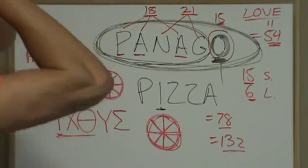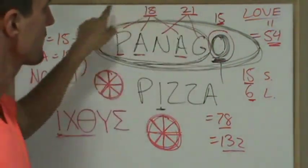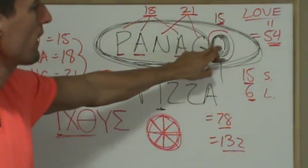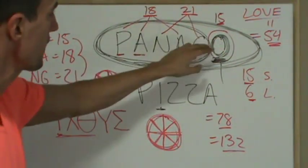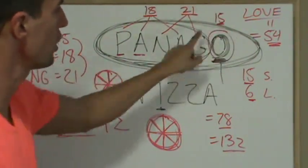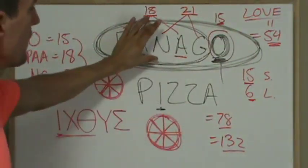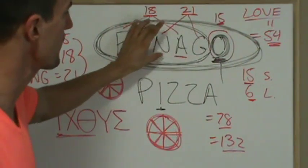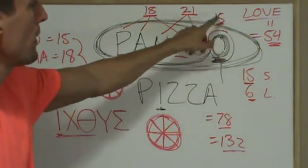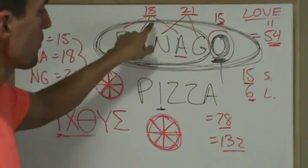And it ends with the famous O, and the logo highlights the keyness of that O by having a separate color in the actual logo for Panago. I believe this is like green and red, or red and green. I think this is red, and this is green. O, 15, all by itself. And then the other letters make 18 and 21.